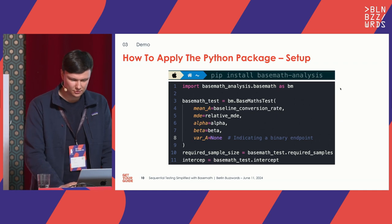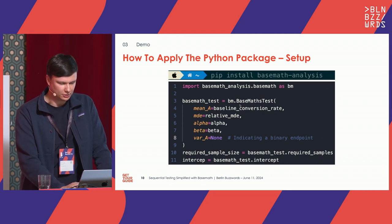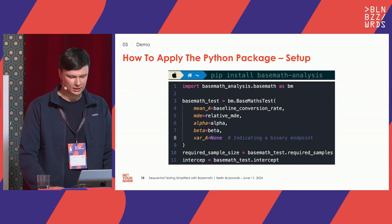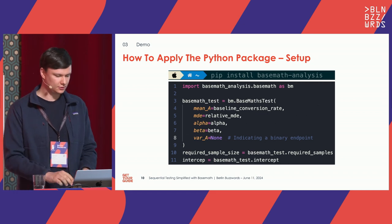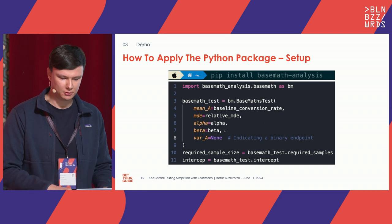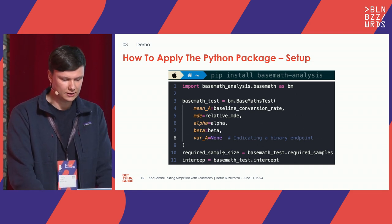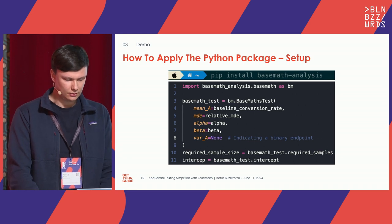The BaseMath test takes four input parameters for a binary endpoint such as a conversion rate: mean_a (baseline conversion rate), the effect you want to detect in relative terms, and your Type 1 and Type 2 error boundaries. For a continuous endpoint like revenue per visitor, you also define the optional parameter variance_a. After specifying these experimental parameters, you can output the required sample size and the intercept — those two values are all you need to evaluate your experiment.